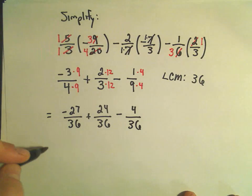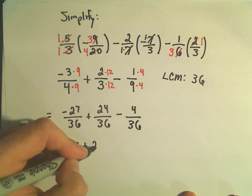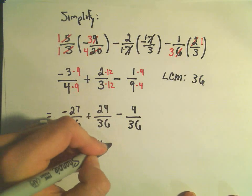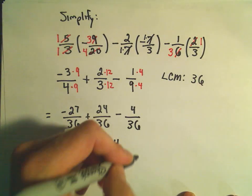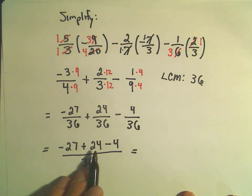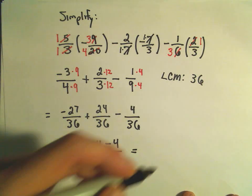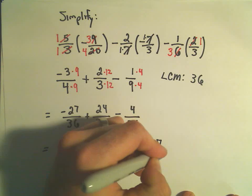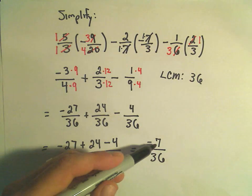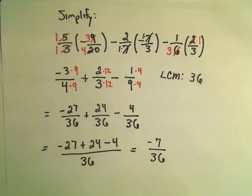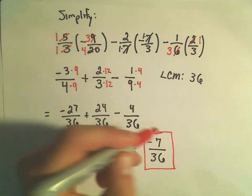And again, for fractions, you just do the arithmetic in the numerator. So to me, this says negative 27 plus 24 minus 4 all over 36. And let's see, so negative 27 plus 24 is negative 3, negative 3 minus 4 would be negative 7 over 36. And again, I kind of ask myself, does this reduce? But 7 does not go into 36, so I think we have now simplified this down to a good place.